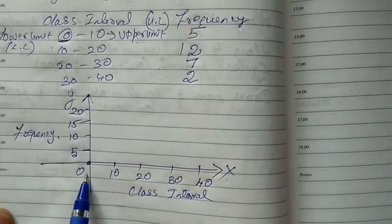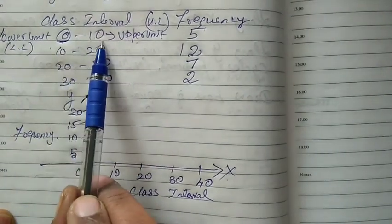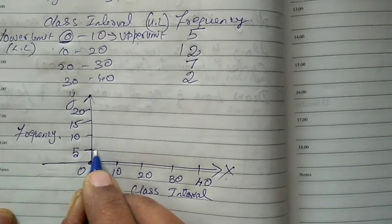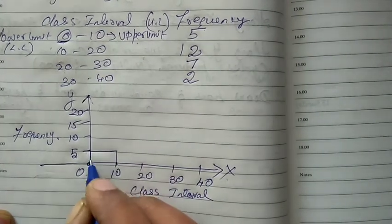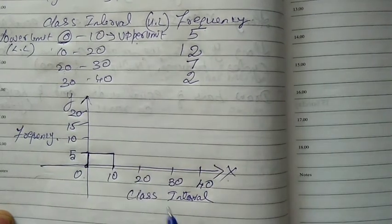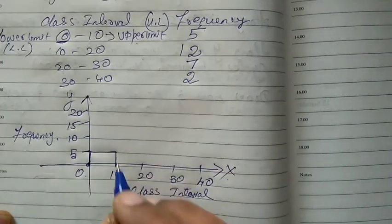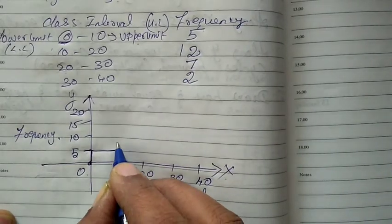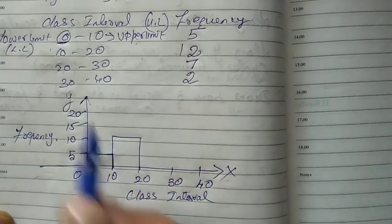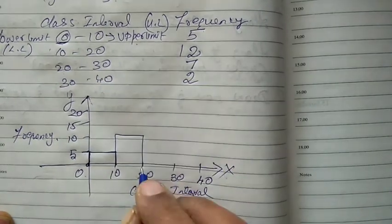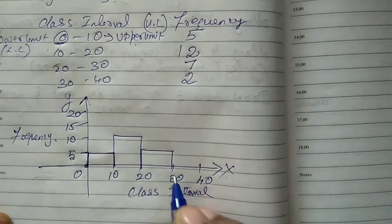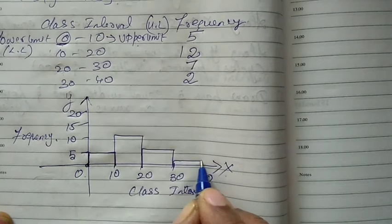Now let us draw the histogram. For 0 to 10, frequency is 5, so we draw a bar from 0 to 10 up to height 5. Then 10 to 20, frequency is 12 — we raise the bar a little above 10. Then 20 to 30, frequency is 7 — just after the 5 mark, a small part. Then 30 to 40, frequency is 2 — a small bar of 2.